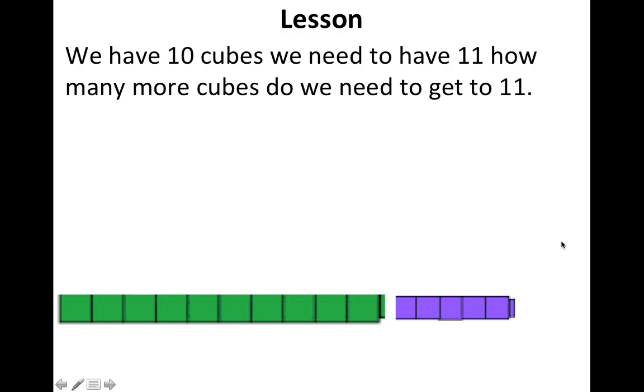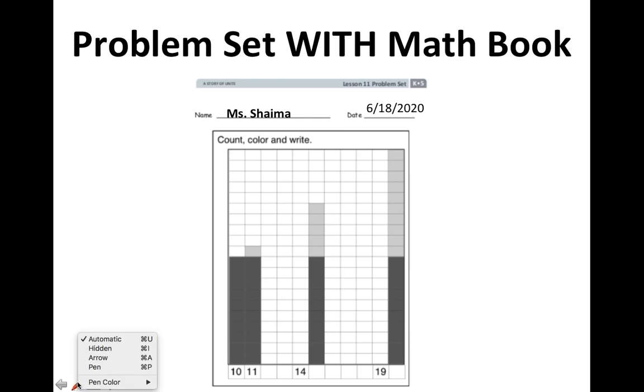Let's go to our problem set. Make sure you're at the right problem set—today we're working on Lesson 11 in Module 5. It's a pretty simple problem set, so you should be done super quick. The problem set says count, color, and write. They give you two examples: 10, 11. As you can see, all the numbers above 10 have 10 as a consistent number. What comes after 10 and 11? We have 12.